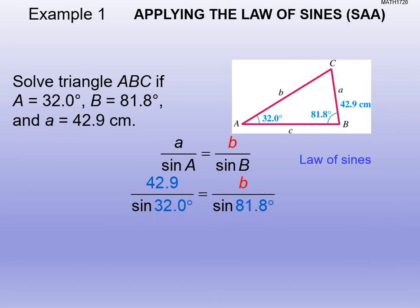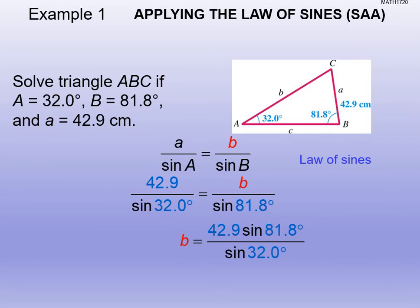Substitute in your values and solve for little b by multiplying both sides by sin(81.8). When using your calculator, put the angle argument in parentheses to avoid errors. We compute 42.9 × sin(81.8°) divided by sin(32°), and you should get approximately 80.1 centimeters for the side length.